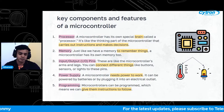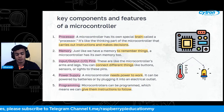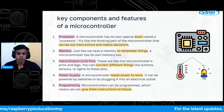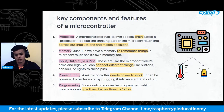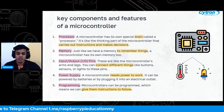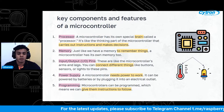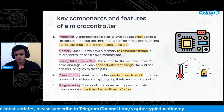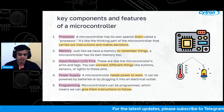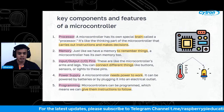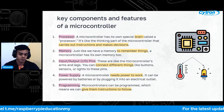Next we have memory. Just like we have memory to remember things, a microcontroller has its own memory too. Instead of remembering where we put our stuff, the memory in the microcontroller stores important information that helps it work. Memory is crucial because it allows the microcontroller to remember and recall information quickly. Without memory, the microcontroller wouldn't be able to store and use instructions or data. When we program a microcontroller, instructions are stored in program memory, while data memory stores temporary information as it works.